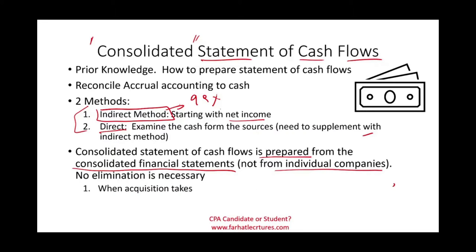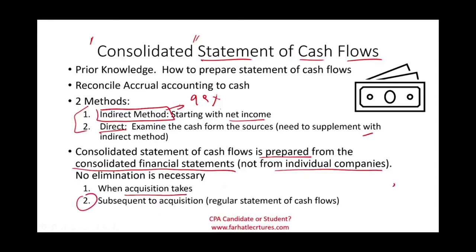There are basically two types of consolidated statement of cash flows. One is when the acquisition takes place, which is what we're covering in this recording. The other is subsequent to the acquisition — that doesn't require much. Subsequent to the acquisition, there's not much to do and we don't have to make any adjustments. Therefore, it's primarily in the first year where we have to be aware of certain adjustments.